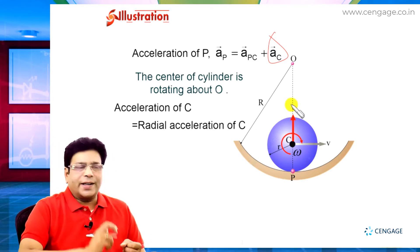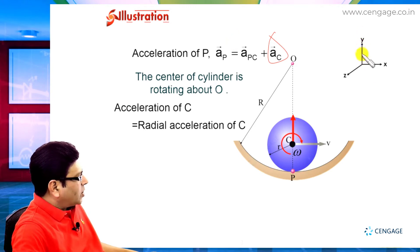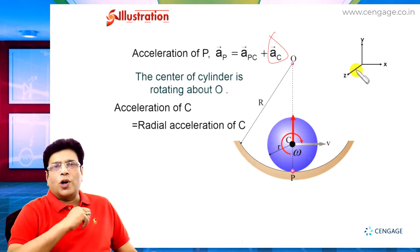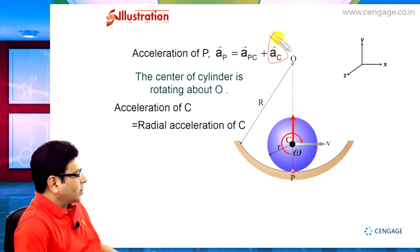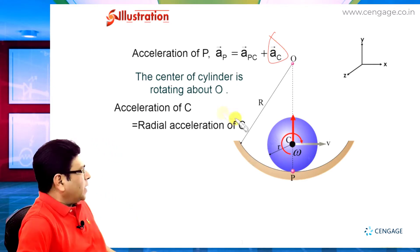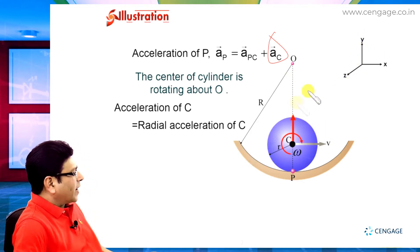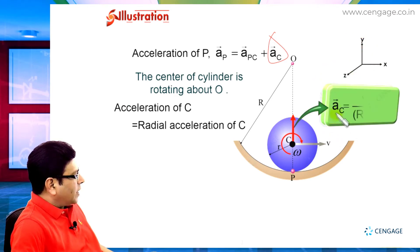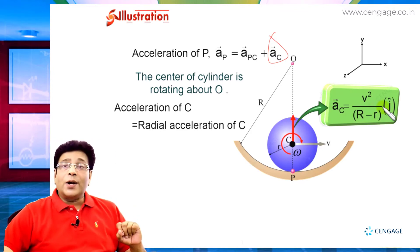Let us assign our coordinate axes. Right side direction is positive x, upward direction is positive y, and direction perpendicular to the screen towards you is positive z. Now we can write the vector equation for the acceleration of c. The radial acceleration magnitude equals velocity squared divided by radius. The velocity is v and the radius of rotation is capital R minus small r, directed in the positive y direction. So the acceleration of c equals v squared divided by (capital R minus small r), in the j cap direction.